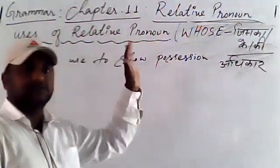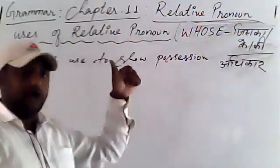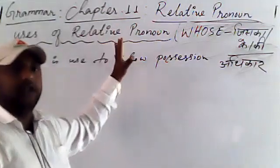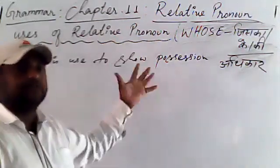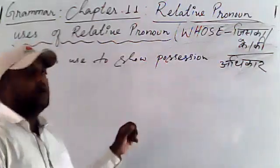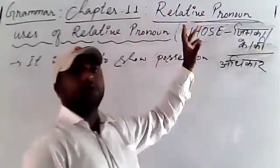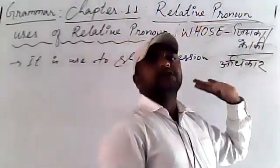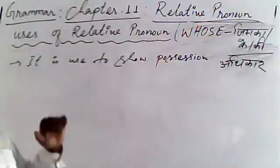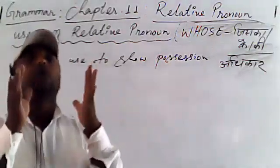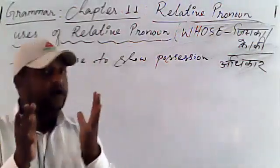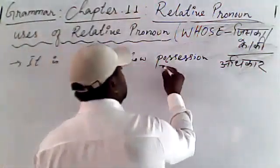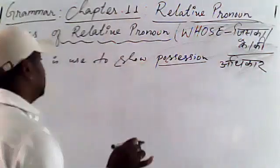I hope it is clear. We are on relative pronoun and we are learning the examples of relative pronoun, where and how to use it. The Hindi of whose is jiska, jiske, and jiski. It is used to show possession — ye adhikar dikhane ke liye priyog kiya jata hai.